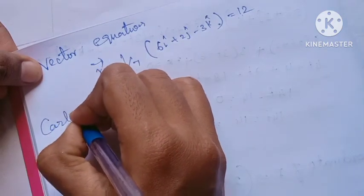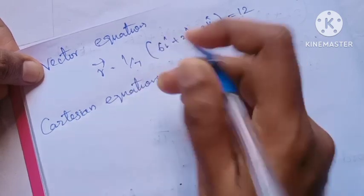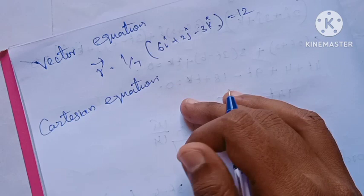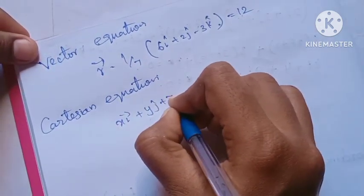Next, Cartesian equation. R vector is equal to xi+yj+zk.